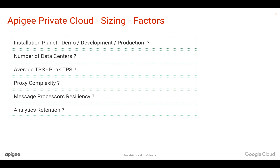Apigee captures API meta-info into Apigee Analytics, which gives you end-to-end visibility. You need to decide how long you would like to retain this analytics data. Based on that, the disk size is going to be different.